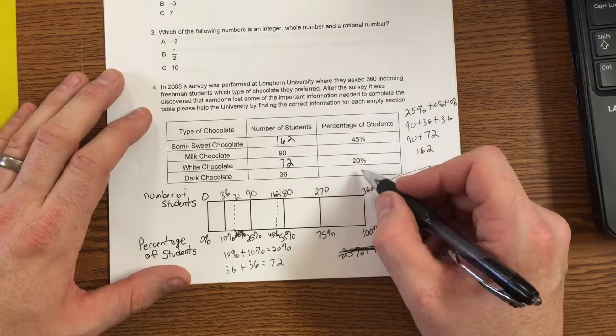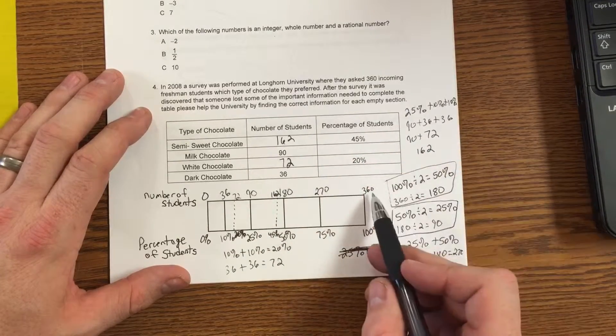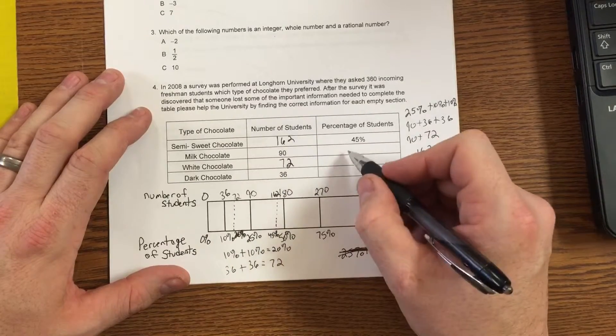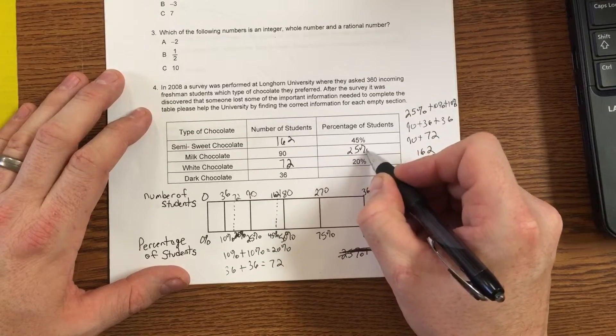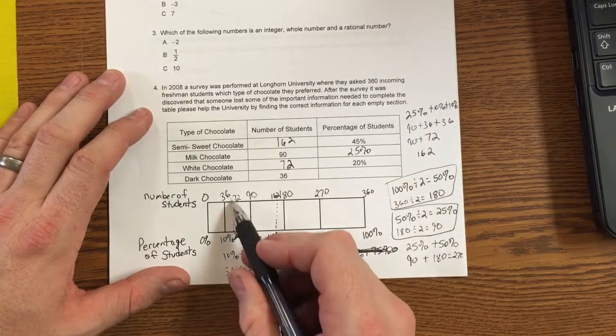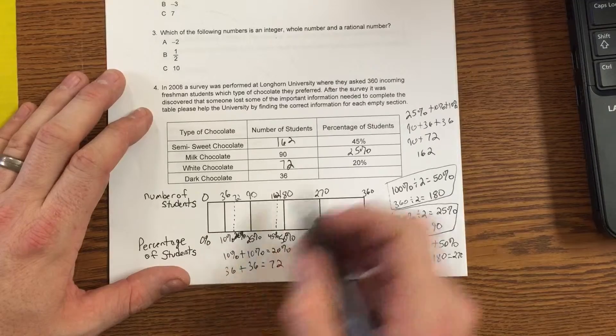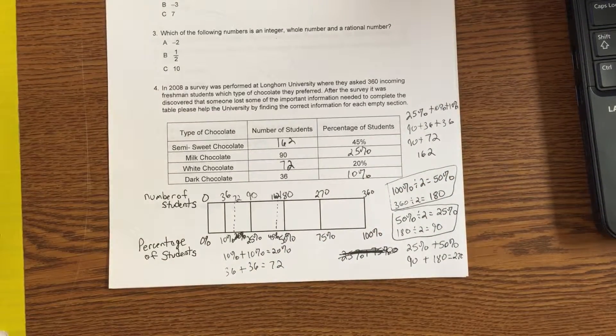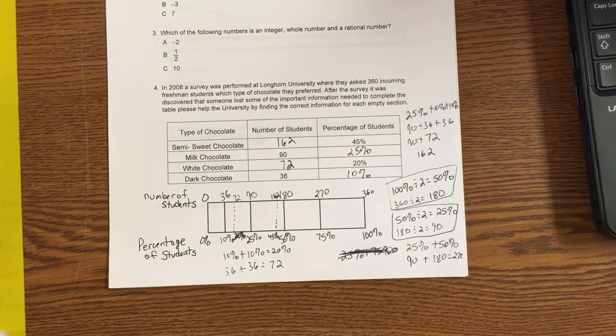I still haven't filled in these two. Let's look at the top row of numbers. I see a 90. I see a 36. I see a 36.